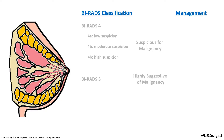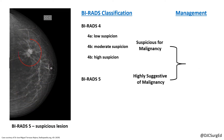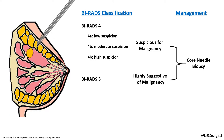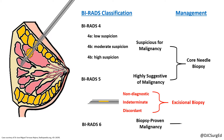BI-RADS 4 and 5 lesions are suspicious for malignancy and should undergo a core biopsy. If the biopsy is non-diagnostic, indeterminate, or discordant, the lesion should undergo an excisional biopsy. Core biopsies that are positive for malignancy or a BI-RADS 6 lesion should undergo appropriate surgical therapy.